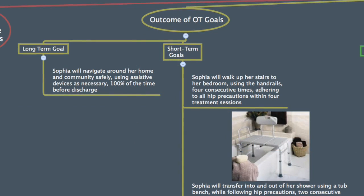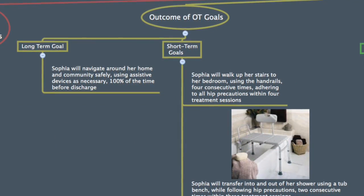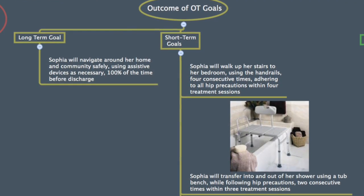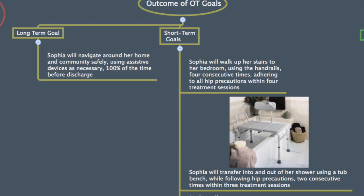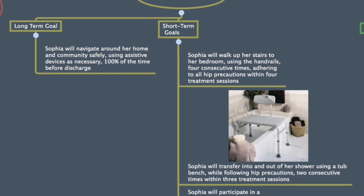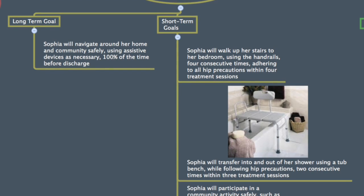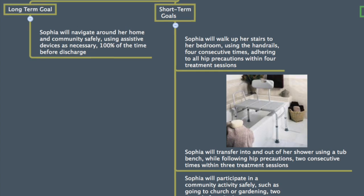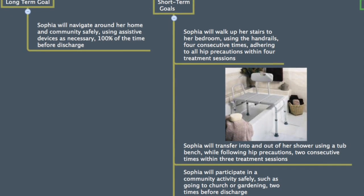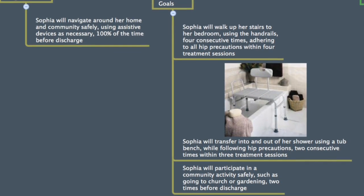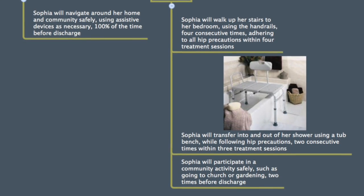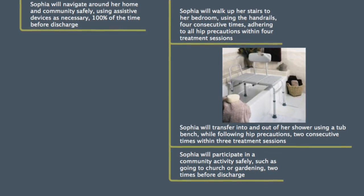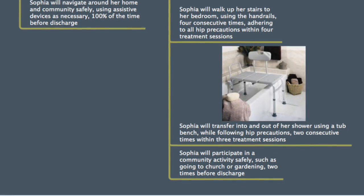Sophia's long-term goal is to navigate around her home and community safely, using assistive devices as necessary, 100% of the time before discharge. Short-term goals include walking up her stairs to her bedroom using the handrails four consecutive times adhering to all hip precautions within four treatment sessions, transferring into and out of her shower using a tub bench while following hip precautions two consecutive times within three treatment sessions, and participating in community activities safely, such as going to church or gardening, two times before discharge.